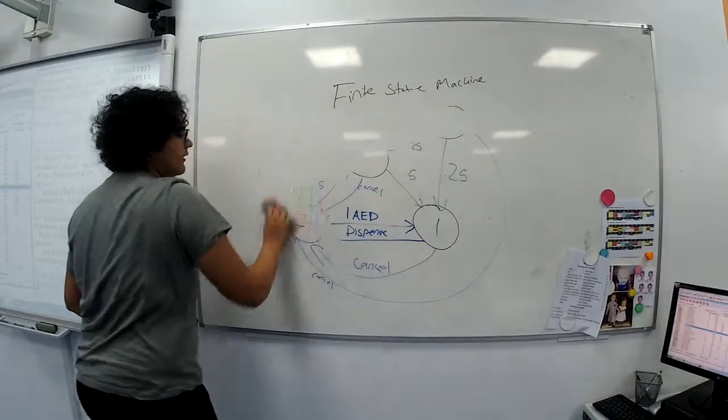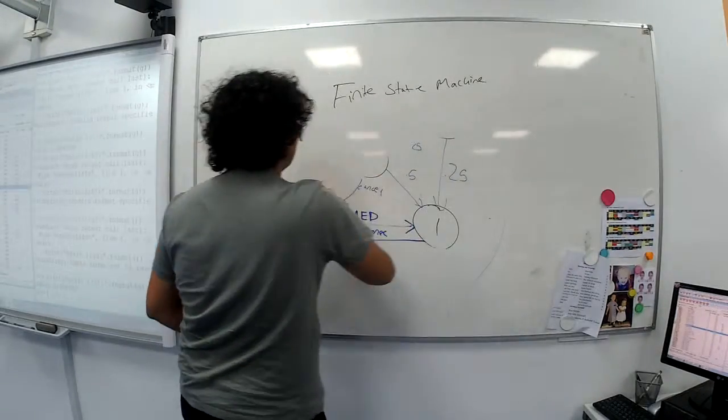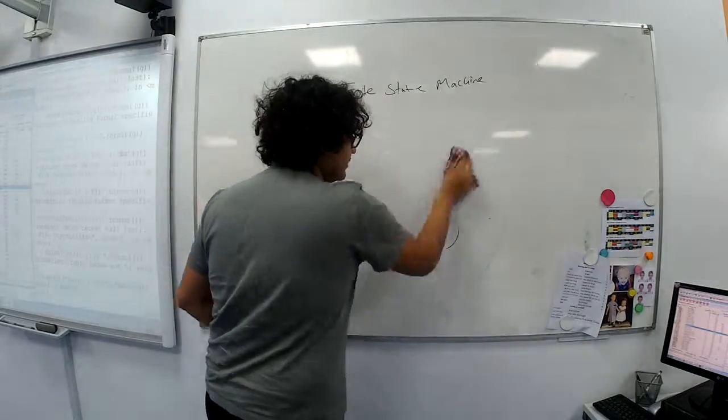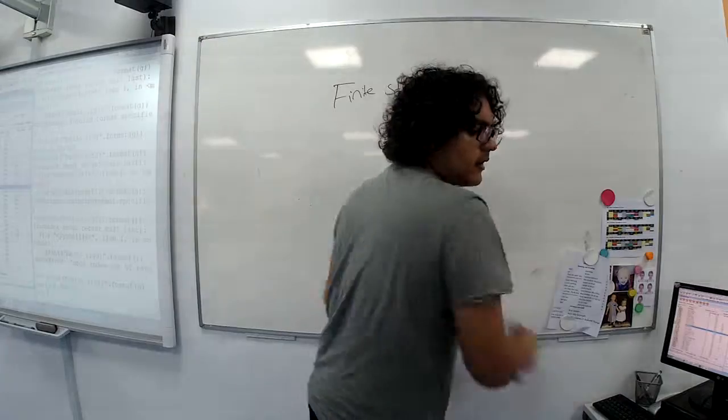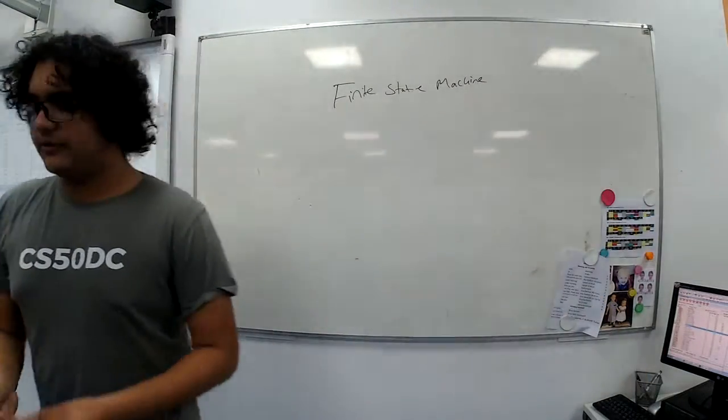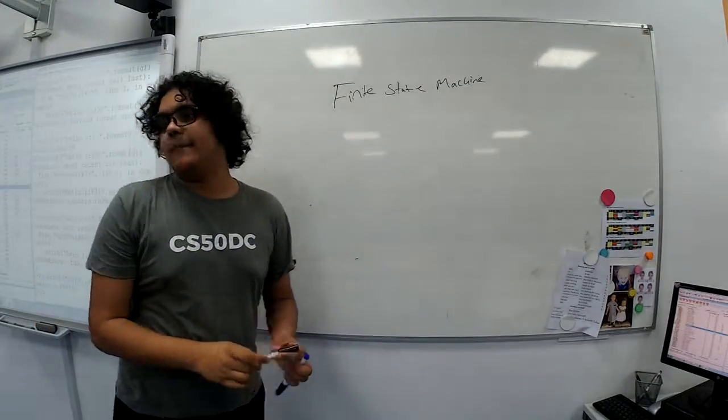And interestingly, finite state machines can be used to represent a language. So, not just a programming language, it could also be a human language, or some kind of, you know, like, number system. You can define rules using finite state machines. So let's say we want to define the rules for a name.